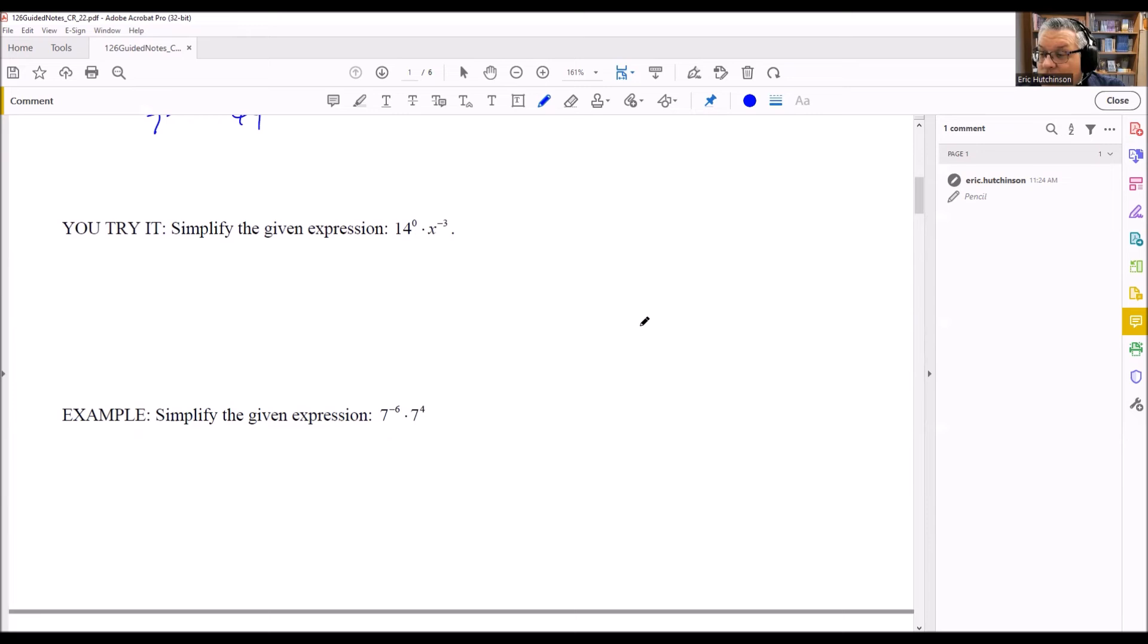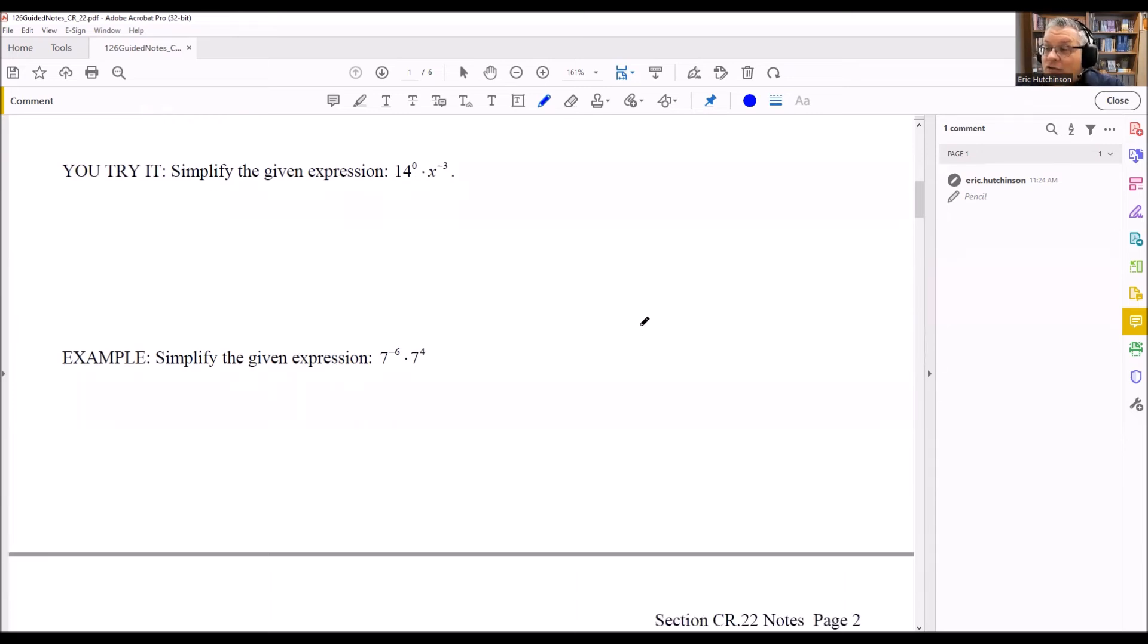This next one is a very similar problem. Again, we have 14 to the power of 0, which equals 1. Then x to negative 3, we can use the property and write it as 1 over x cubed. 1 times anything is itself, so we leave our answer as 1 over x cubed.